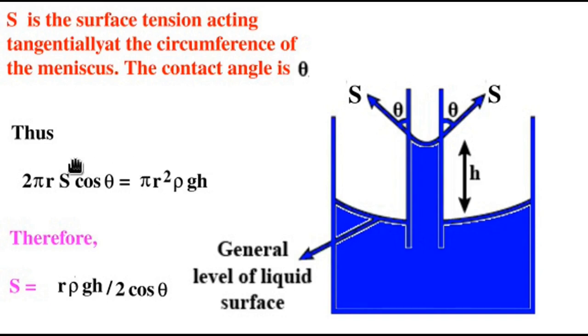Now, this S cos theta is acting at each point along the circumference of the meniscus of the liquid within the tube. So, we have 2πr which is the total length of the meniscus times S cos theta. So, this is the force per unit length. So, that should be equal to πr² that is the area of the cross section of the tube times the density of the liquid rho times g times h. So, therefore, we can write S equals r rho g h divided by 2 cos theta.